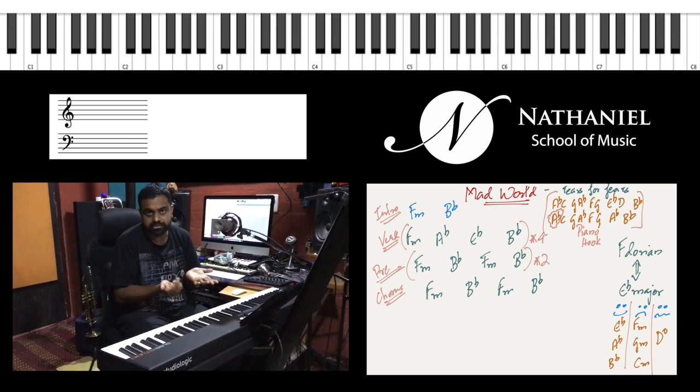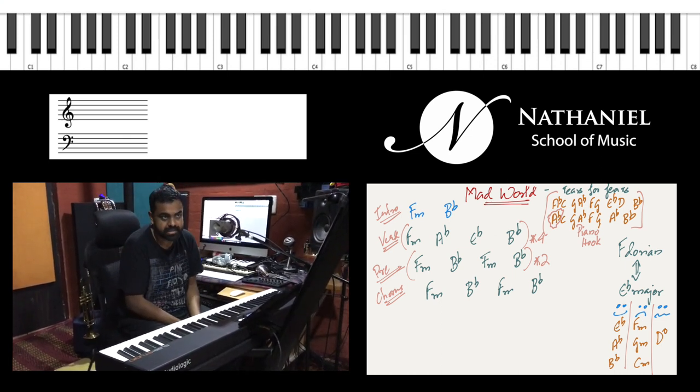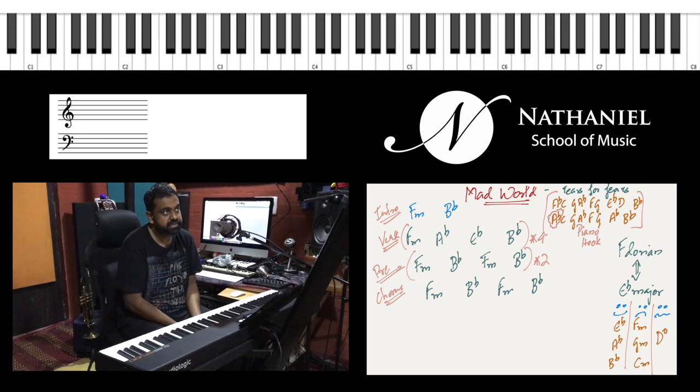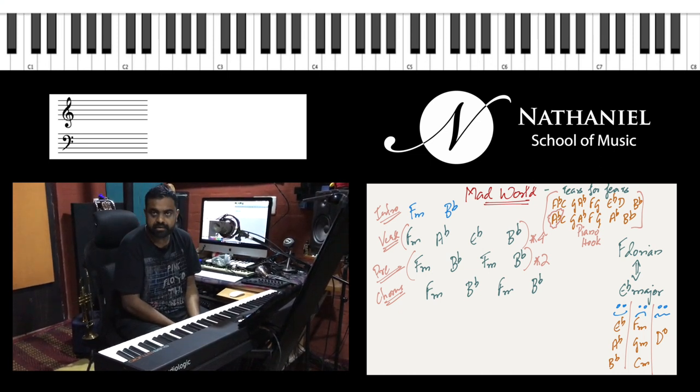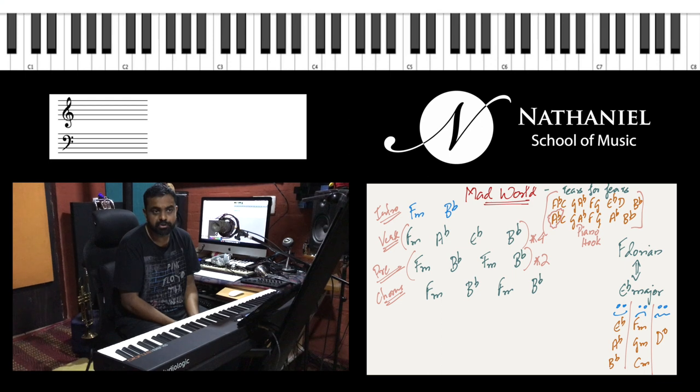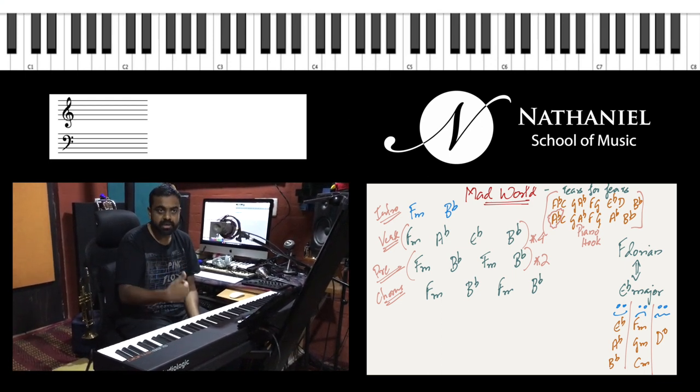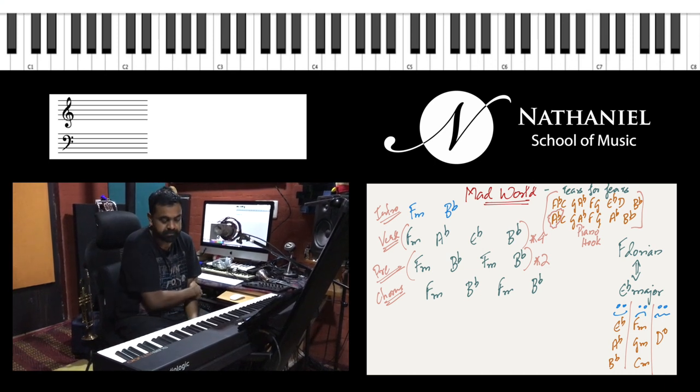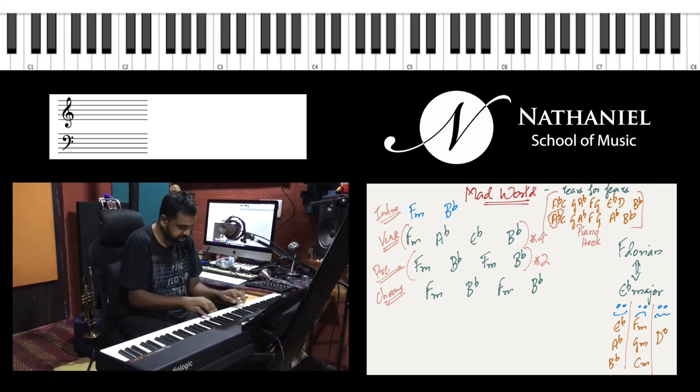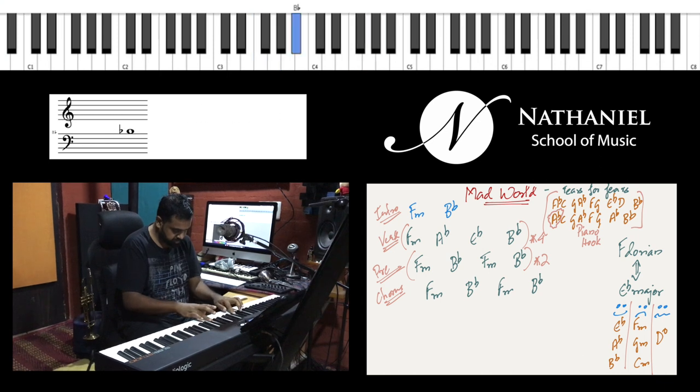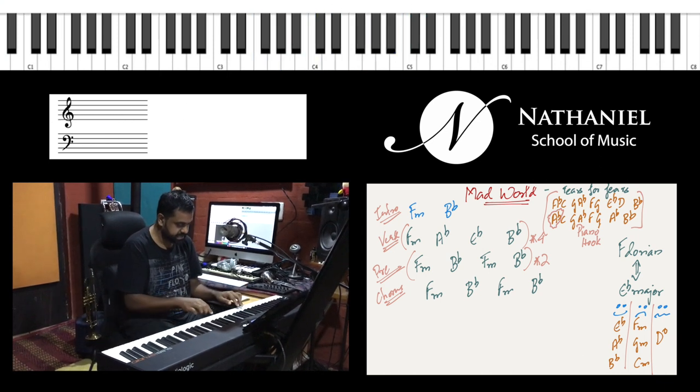A dorian scale is generally the second degree or the second mode from any major scale, so it borrows the same notes and also the same chords from that parent major scale. So if you take E flat major, which has three flats right,